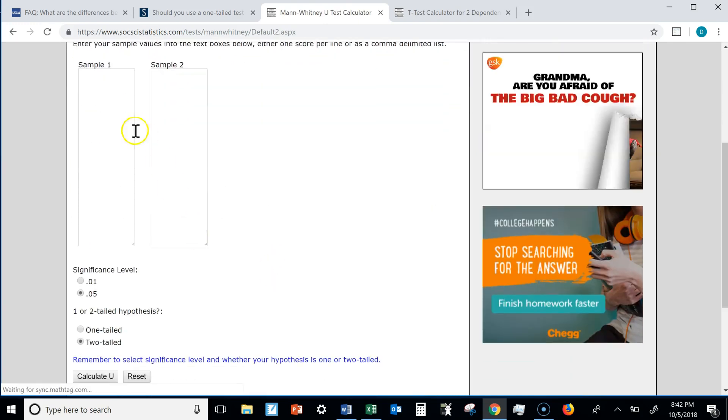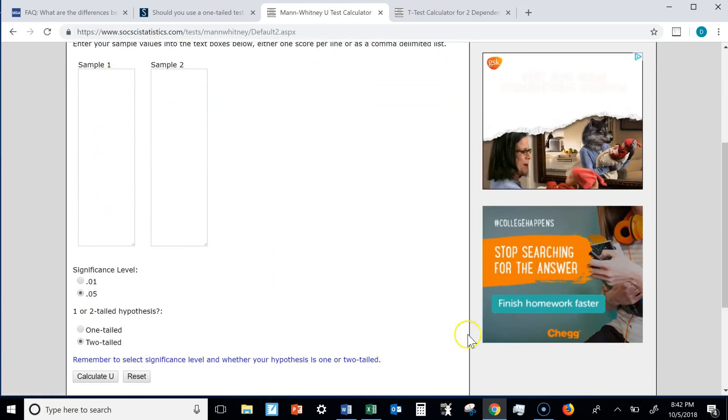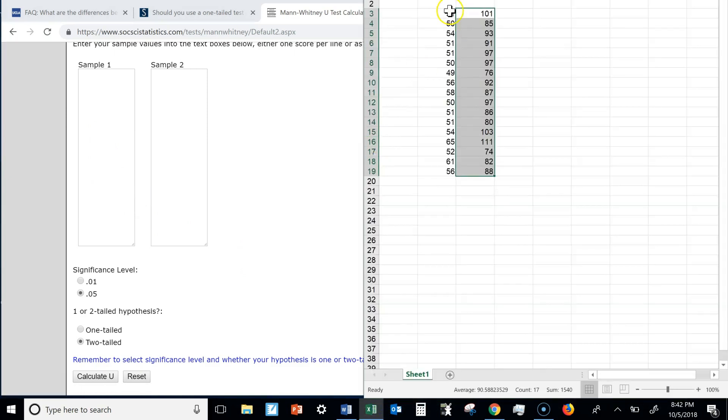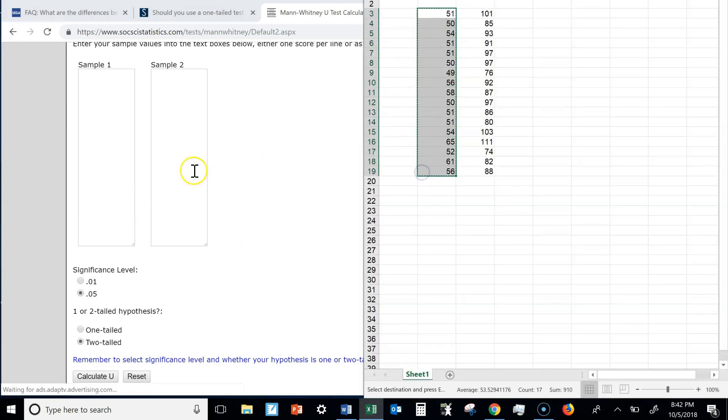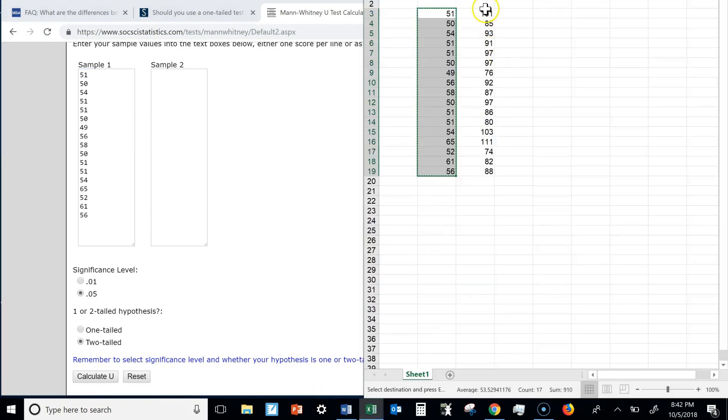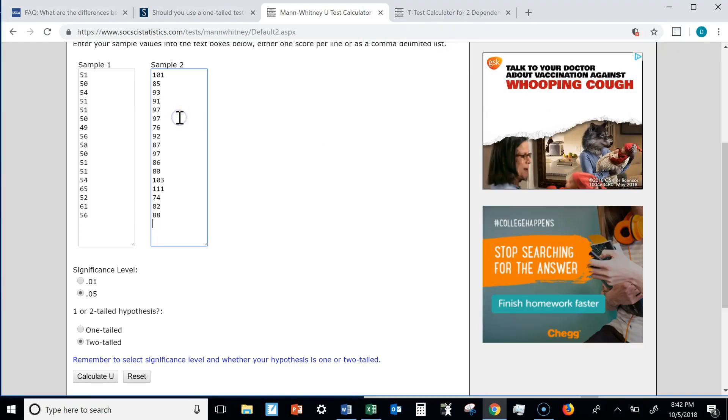We scroll down, and we enter our data into sample one and sample two, and I've actually got some data from Excel here that I'm going to plug in, copy it and paste it. Now I created this data so that it should have a very, very small p-value.